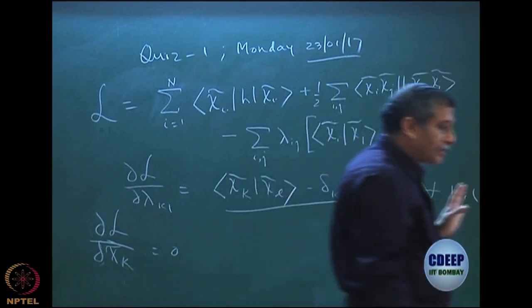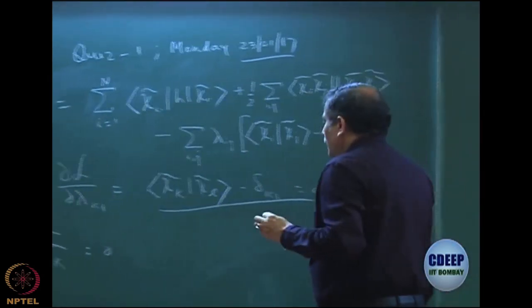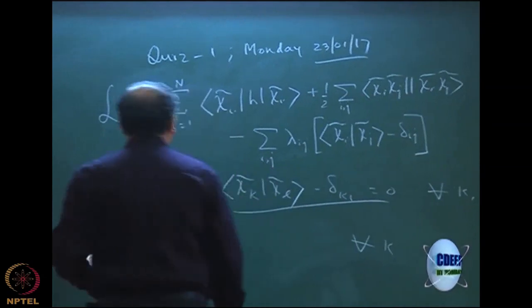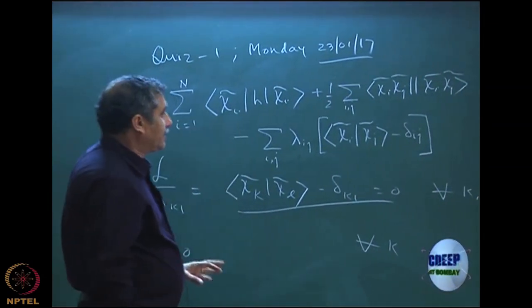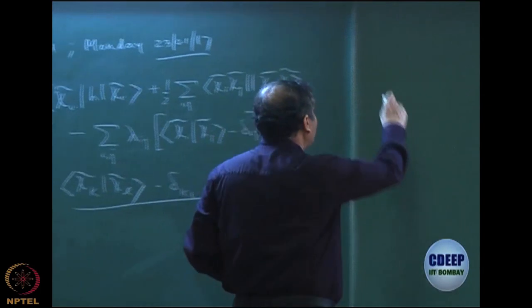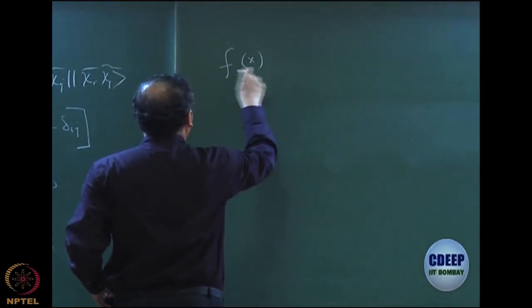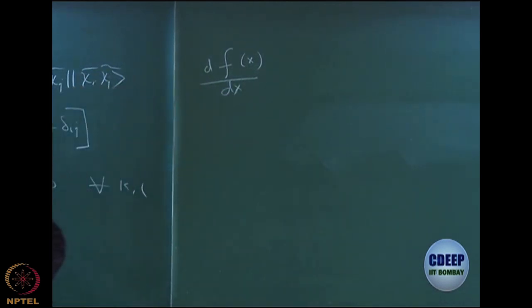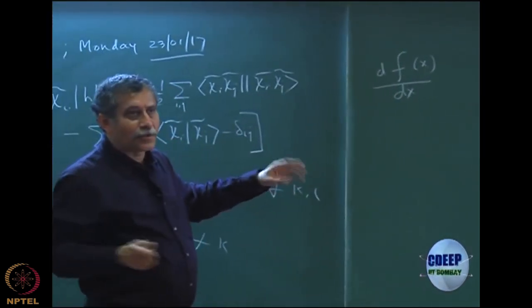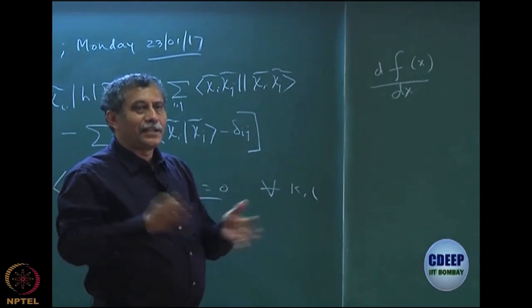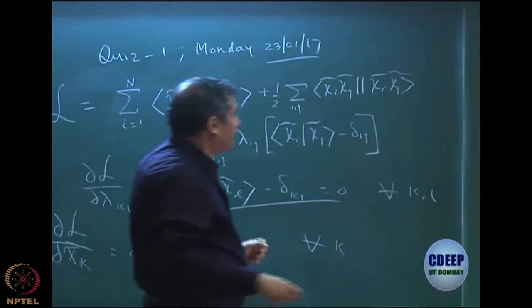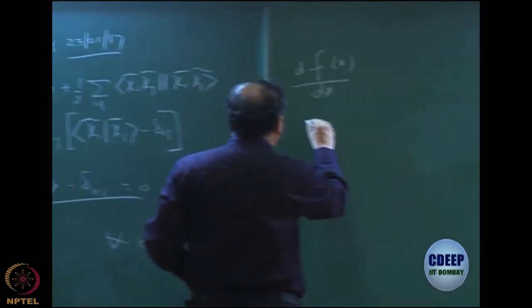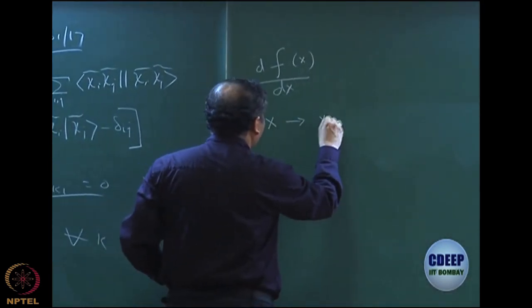Before we start doing this, let me write the first derivative in a somewhat different manner which is easy. I hope all of you know this interpretation. Let us say I have f of x and I want to calculate df dx. Of course, in this case, I do not write delta because it is only one variable. How do you write this? There are many ways of looking at first derivative. Of course, if you have given analytic function, you can directly differentiate. In this case, such is not the case. One way to look at it is the following that as you change x to x plus delta x, some infinitesimal quantity,